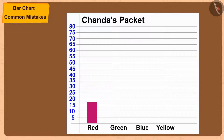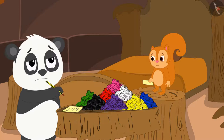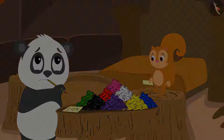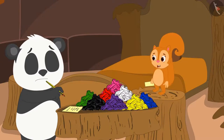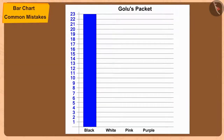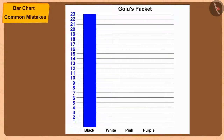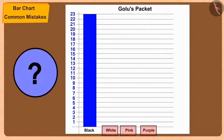Chanda quickly created her bar chart. But Golu got stuck after making an incomplete bar chart. He explains that the number of white balloons is 70, but on his paper he can only write numbers up to 23 on the vertical line, so he cannot show the number of white balloons in his bar chart.